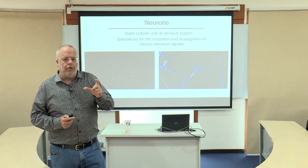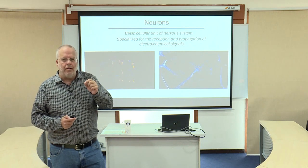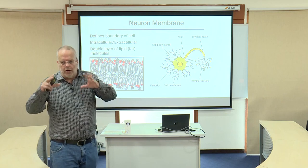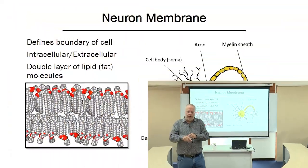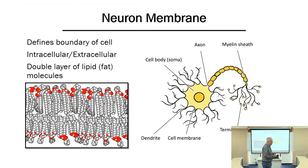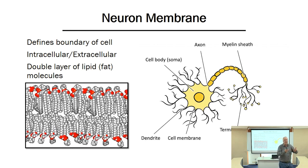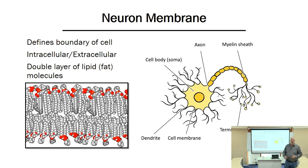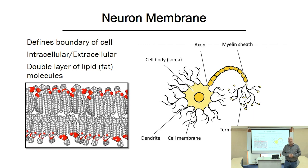When we look at the neuron, the thing I really want to focus on is the membrane. The membrane is what covers the neuron — it's very similar to your skin. It keeps the inside of the neuron distinct and separate from the outside. And the membrane is composed of this lipid bilayer. Lipid just means fat.